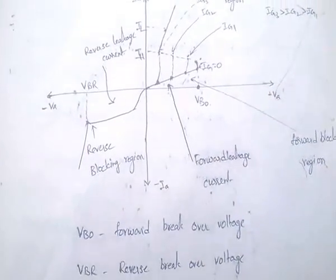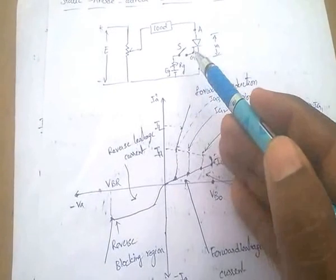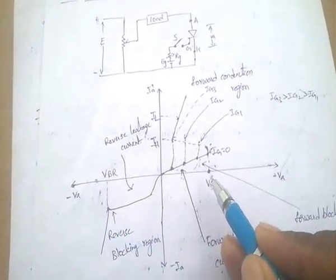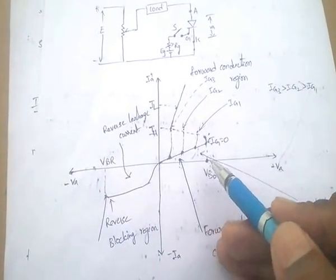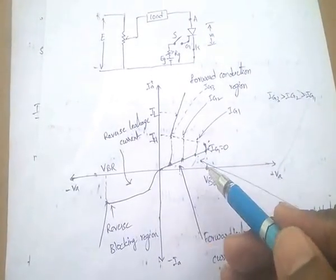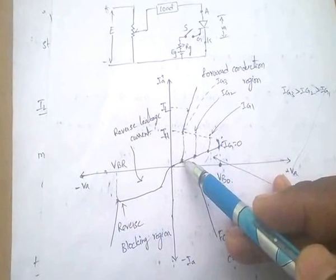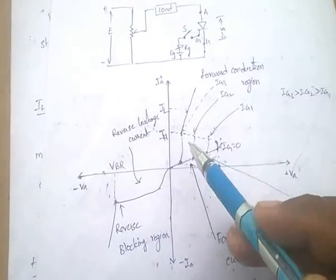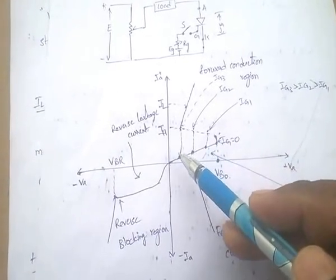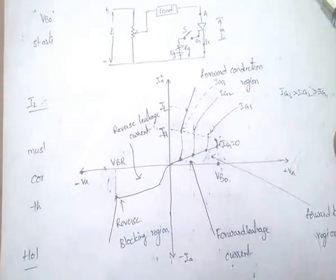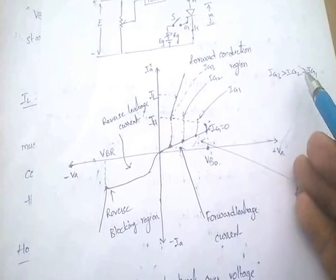Very, very important: without any gate signal (open gate condition), the thyristor only starts conducting when the voltage reaches the high forward break-over voltage. If we apply a gate signal, we require very less voltage to start conduction. The gate currents IG3 > IG2 > IG1 correspond to progressively lower breakover voltages.